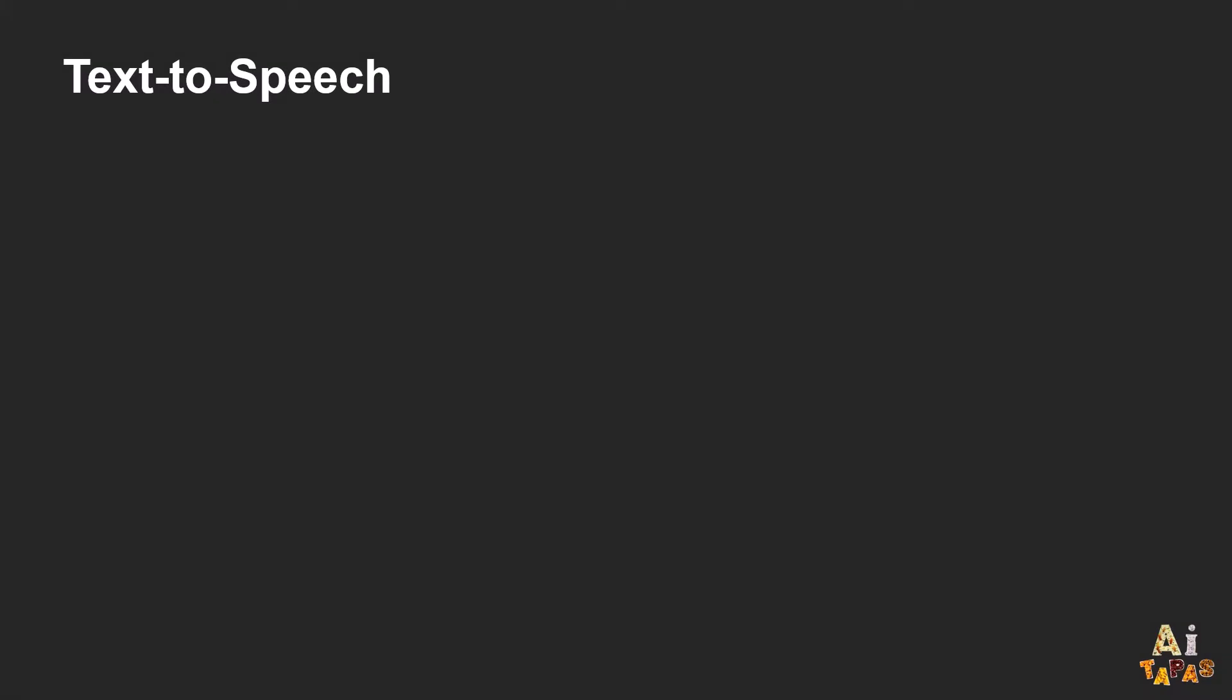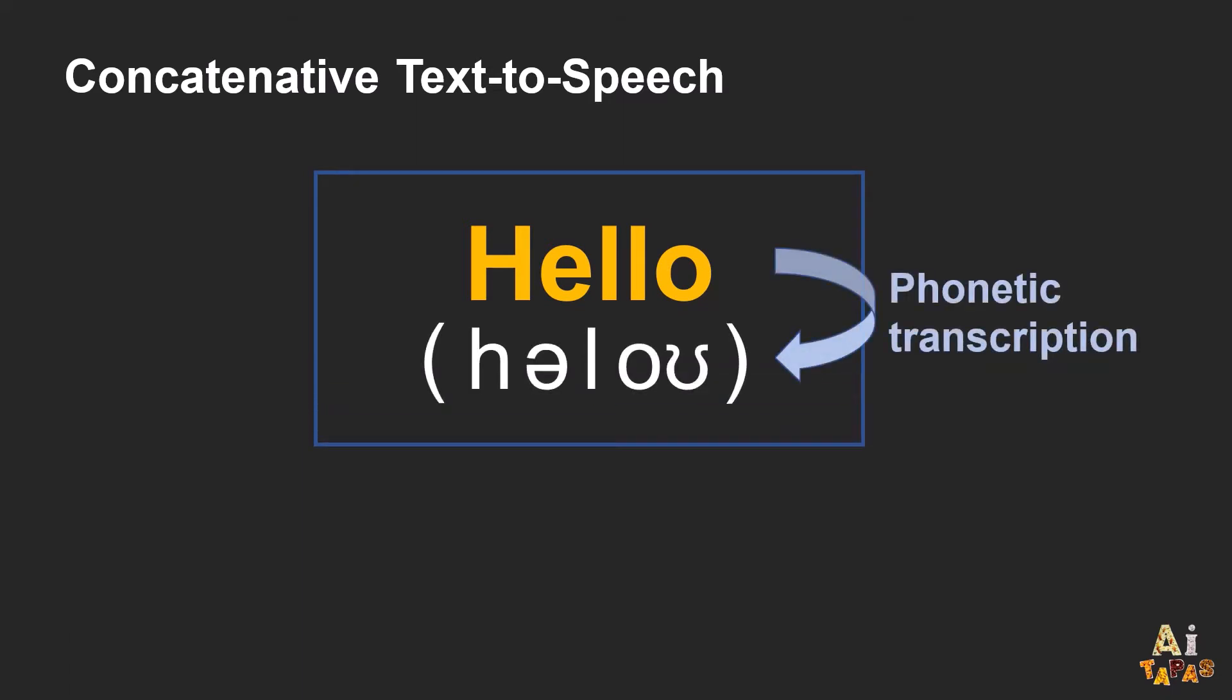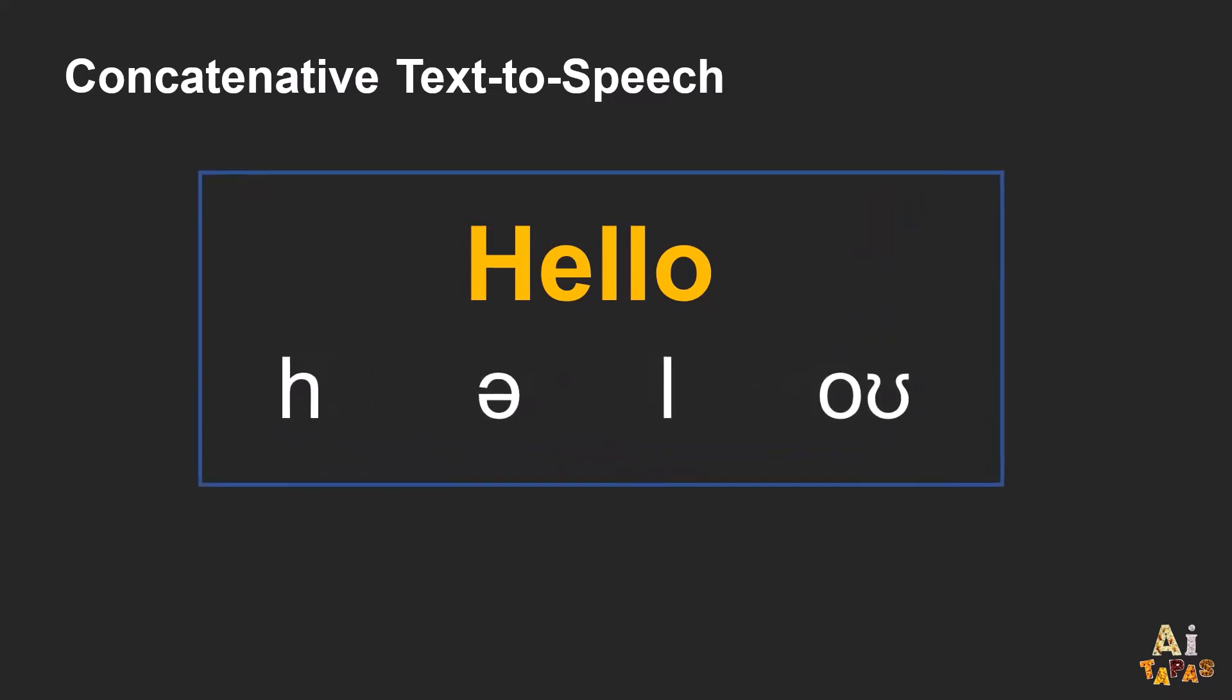If you pause and think for a moment on how you can perform text-to-speech, you will probably formulate a method that is very similar to what is called the concatenative approach. For example, suppose we would like to produce the speech for the word HELLO. The concatenative approach will first perform a phonetic transcription of the word into units called phonemes. So in this case, we have four phonemes, and each phoneme has its own unique pronunciation.